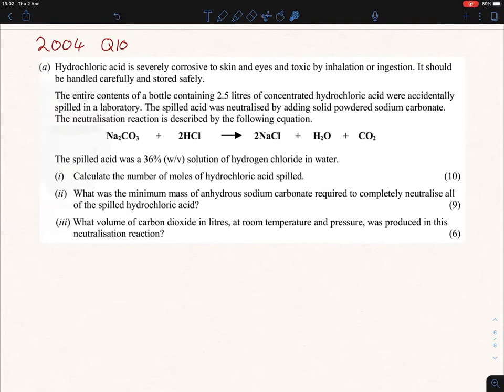We're given a reaction here. We're told that the spilled acid was a 36% solution of hydrogen chloride in water. Question i is asking us to calculate the number of moles of HCl spilled. Now we must be careful here - if we look back, we're not given anything in terms of mass. We can't use our traditional formula. There is another formula we often use though, and that is number of moles equals volume times molarity over a thousand.